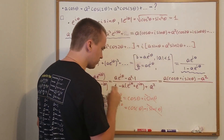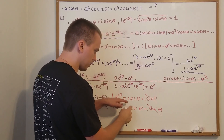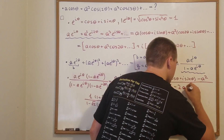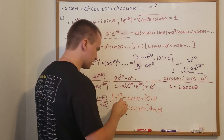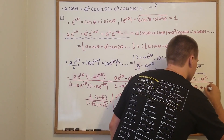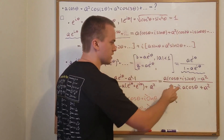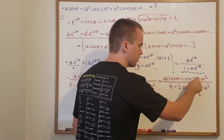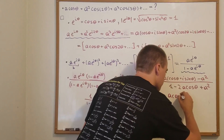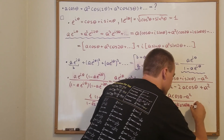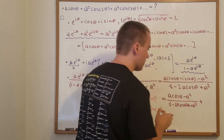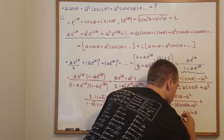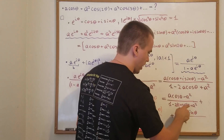On the bottom we get 1 minus 2A·cos θ plus A². So the full expression has numerator A·cos θ − A² plus i·A·sin θ, and denominator 1 − 2A·cos θ + A².